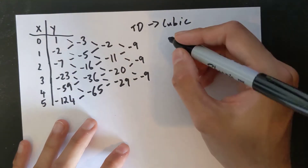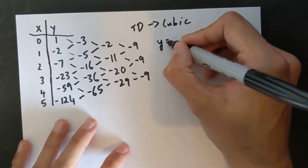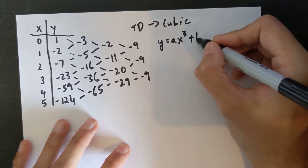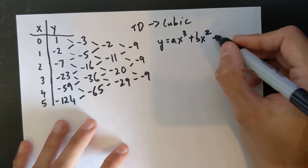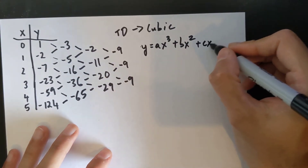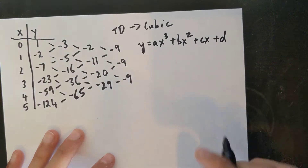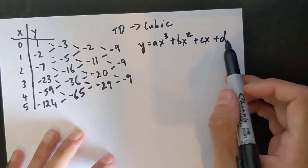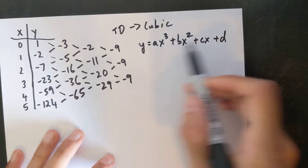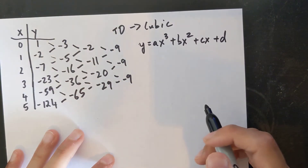The standard form for a cubic equation is y = ax³ + bx² + cx + d. The goal is to find a, b, c, and d in this equation, and once I find those I have found the equation for that table of values.